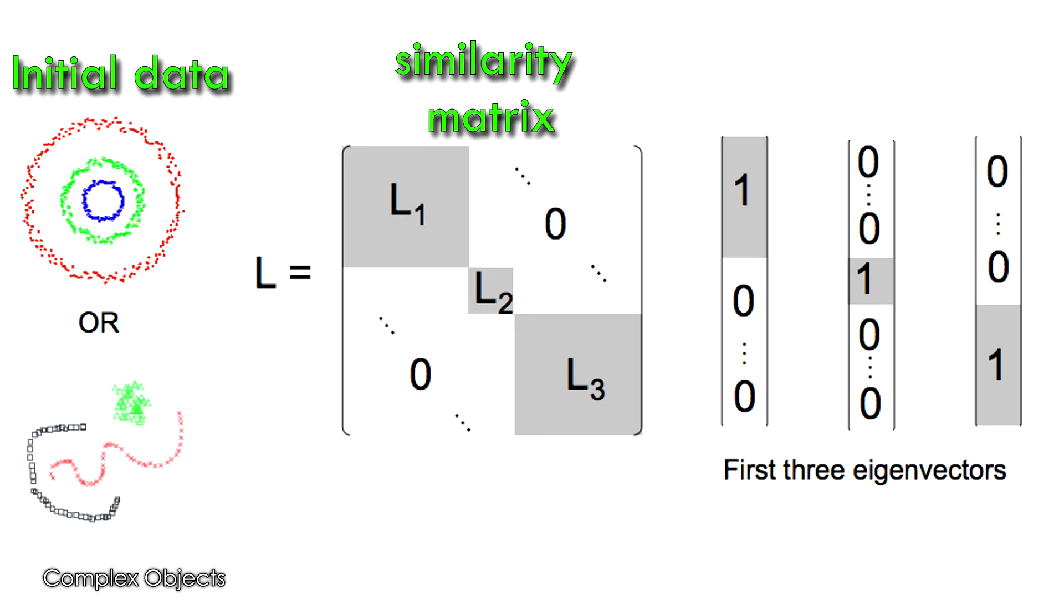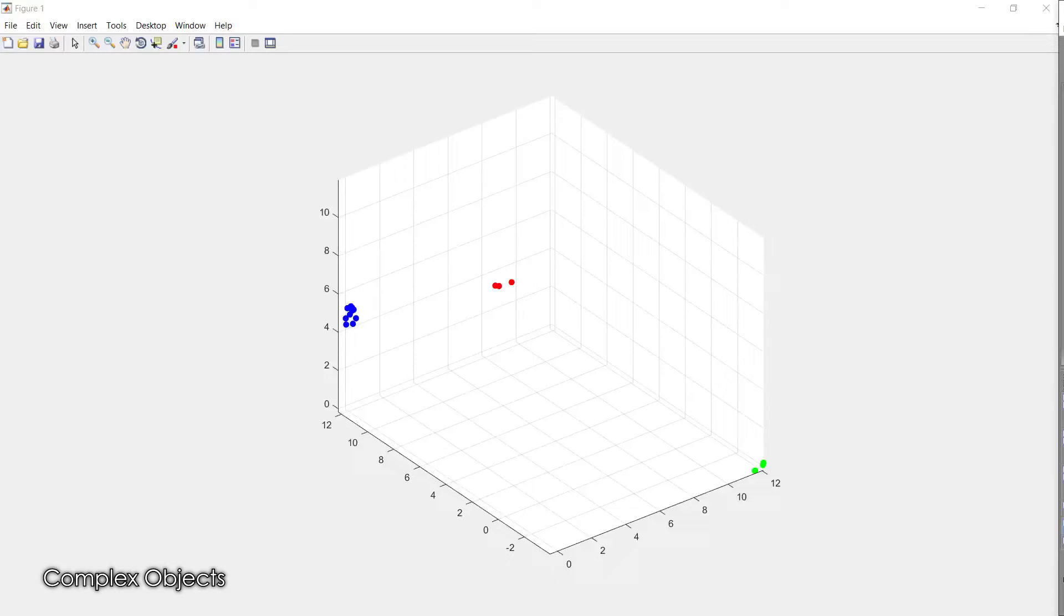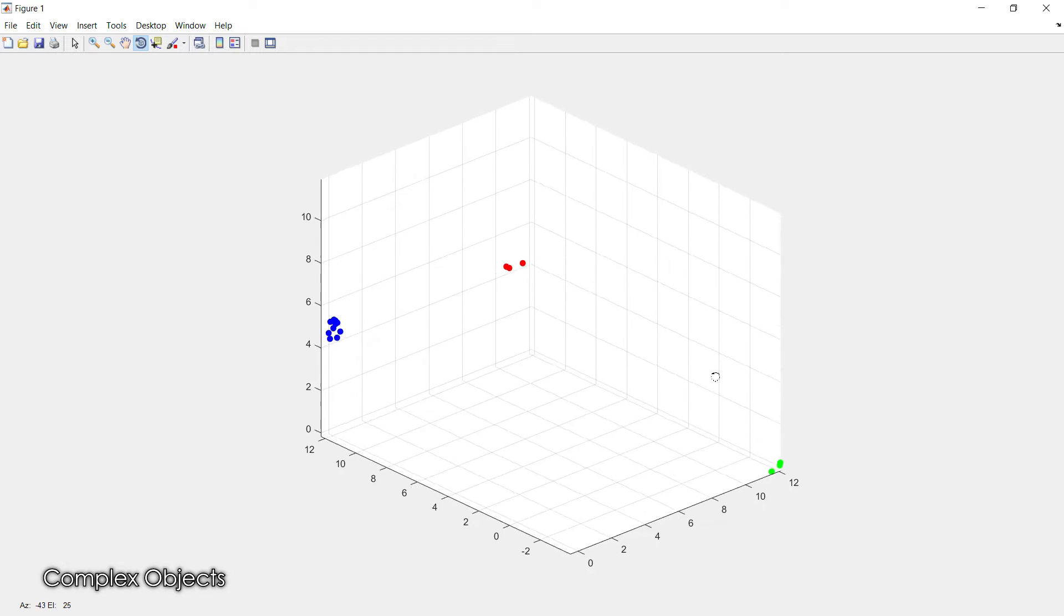The intuition for how or why this is the case, why the embedded points are the rows of this eigenvector matrix, is really kind of tricky I think. Here's an example which demonstrates how it can work as simply as possible. I have here a set of points in three dimensions; you can see that there's three separate very distinct clusters.